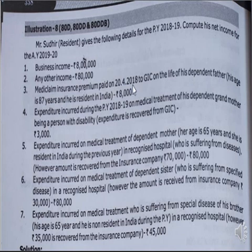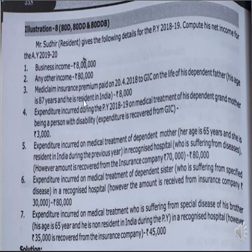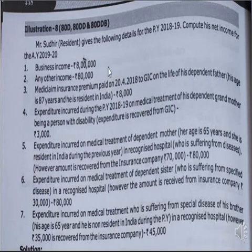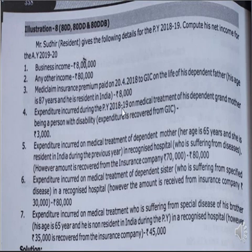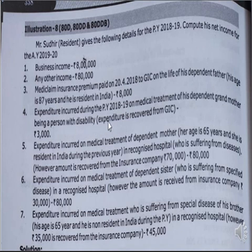Medical health insurance premium paid on the life of his dependent father, whose age is 87 years — so his father is a super senior citizen. The premium paid is 8,000. Maximum limit for a senior citizen is 50,000. So 8,000 vs. 50,000 — whichever is less, 8,000 is eligible. Expenditure incurred during the previous year 2018-19 on medical treatment of his dependent grandmother, being a person with disability — this comes under Section 80DD. However, the family definition under Section 80DD does not include grandmother. It includes only assessee, spouse, dependent children, father and mother, and dependent brother and sister. Grandmother is not family under Section 80DD, so this deduction is not eligible.